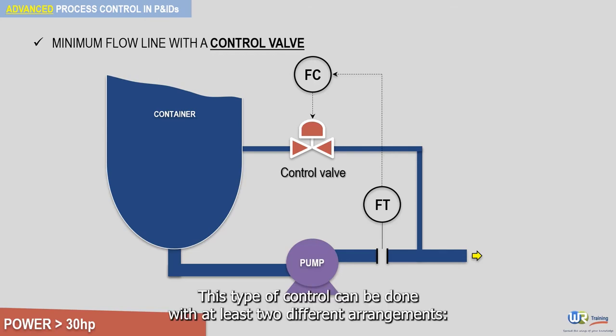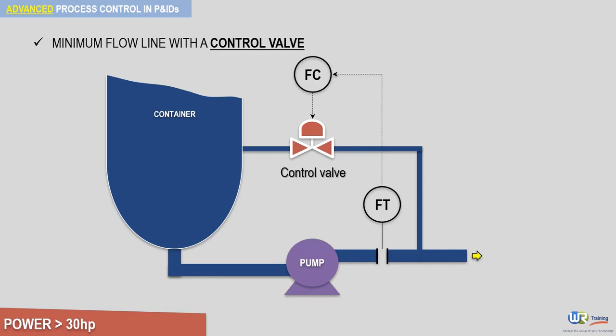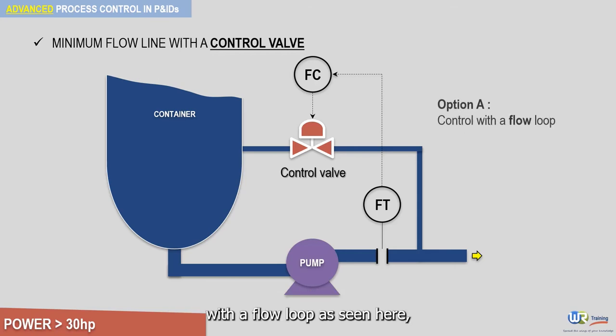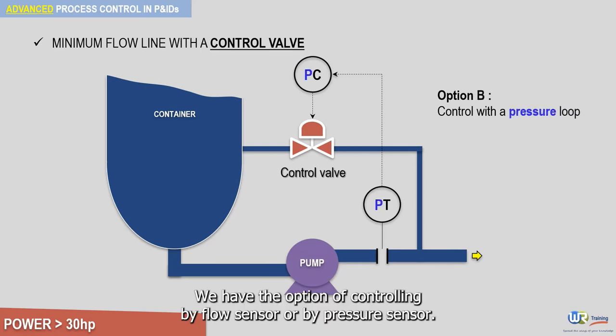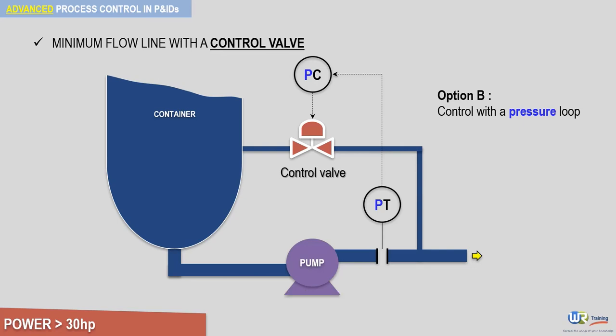This type of control can be done with at least two different arrangements: with a flow loop as seen here, or with a pressure loop. We have the option of controlling by flow sensor or by pressure sensor. Usually, the flow loop is selected.